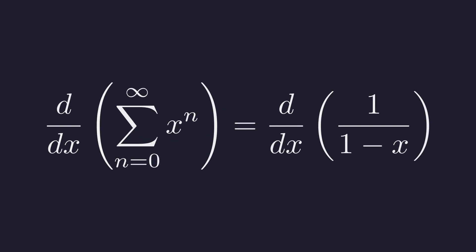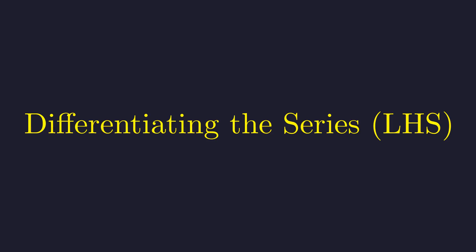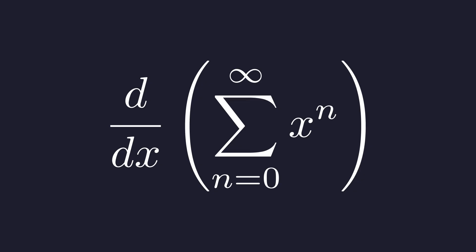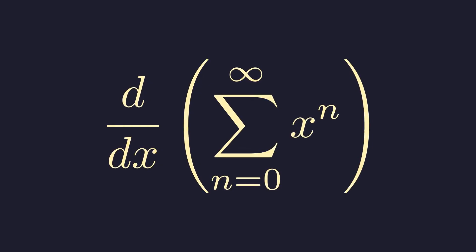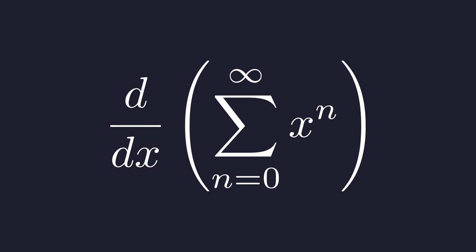We apply the derivative operator to both the left and right sides of the equation. First, let's focus on the left-hand side. To make the differentiation clear, let's write out the first few terms of the series. We start with the derivative of the summation with respect to x. Let's expand the sum to see what we're working with.